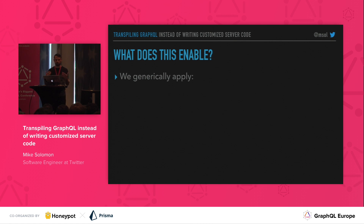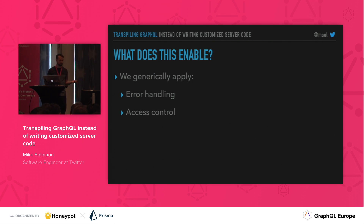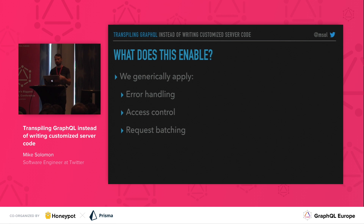Furthermore, it gives us a good place to generically apply a few things. We can handle errors by generating error handling logic in all queries — so it's easy to see how it works and we can't forget to do it. For access control, it's similar: we can't forget about it because it's generated into the queries. We can also do batching — we can generate code that handles batches of requests, so for example if you want to look up a whole list of tweets, you can ask for them in a single request and avoid the N+1 problem. And it's also easy to add operational improvements generically in this model.